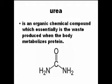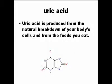Urea is very important because it is the substance that gives the characteristic yellow color to the urine. It is an organic chemical compound — one carbon with two nitrogen and hydrogen molecules. Urea is produced from the natural breakdown of body cells and from the food that you eat.